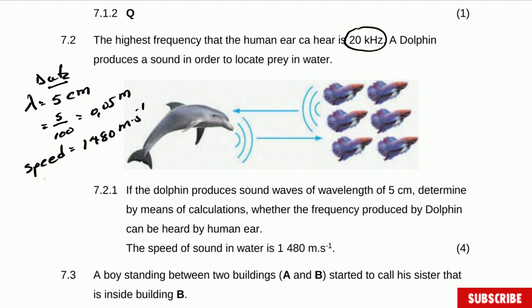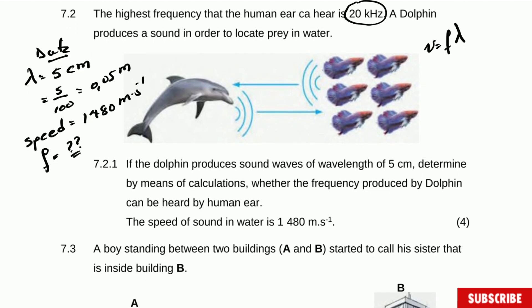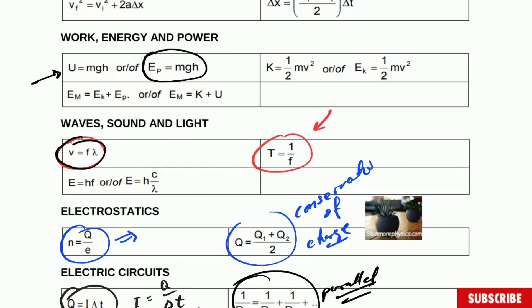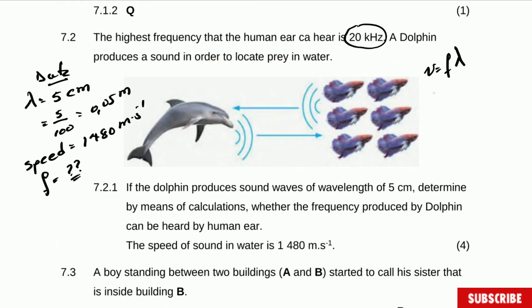We need to calculate frequency so we can compare and know if the human can hear that. We have the formula: speed is equal to frequency multiplied by wavelength, and we substitute. This formula is given to you in the formula sheet. So the speed is 1480, which is equal to frequency multiplied by the wavelength of 0.05. When you calculate you get that frequency is equal to 29,600...